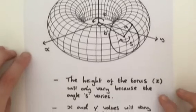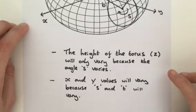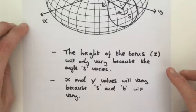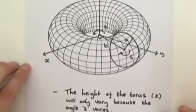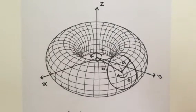The last point with our X and Y values will vary because S and T will vary is slightly more complex. However, we will go over that shortly. But if you want to have a go now you can try and derive the vector valued function. So pause the video and you can come back when ready.